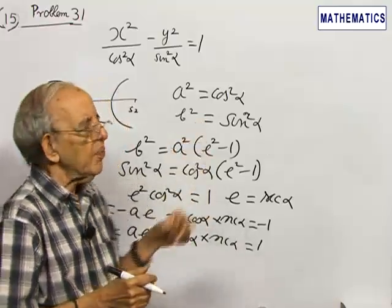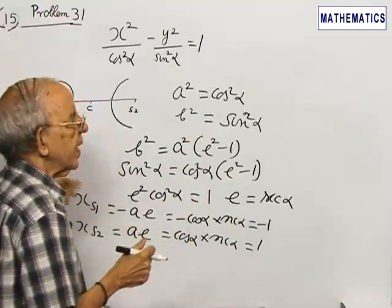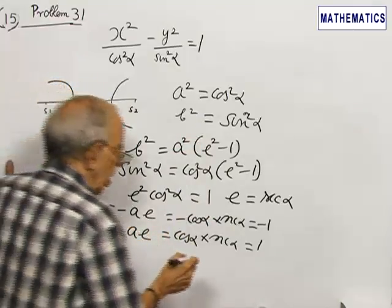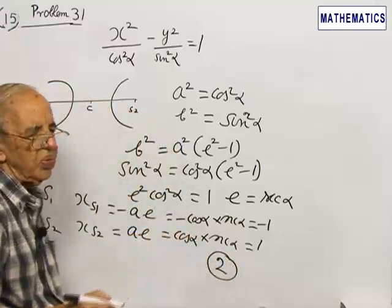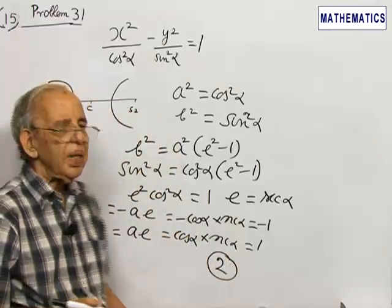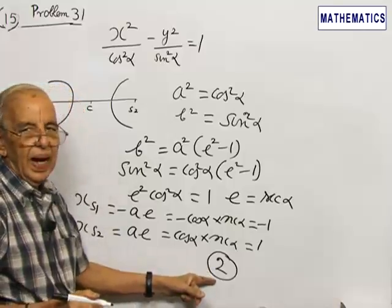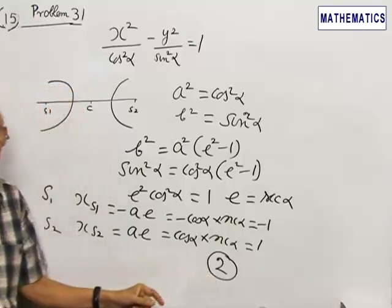Looking at the four choices, you are able to see that choice number 2, that is abscissa of the foci, is the correct answer. Thank you.